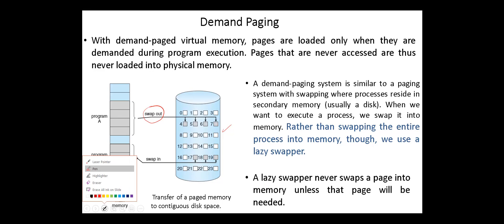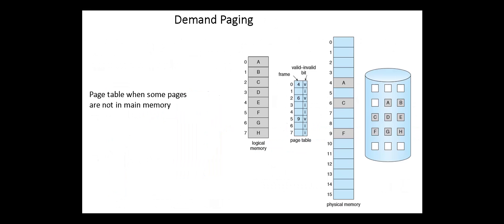Another more accurate term for the lazy swapper is a pager. The basic idea here is that when a process is swapped in, the pager only loads into memory those pages that it expects the process to need right away. For example, for this process, we have only pages A, B, and F loaded into memory.